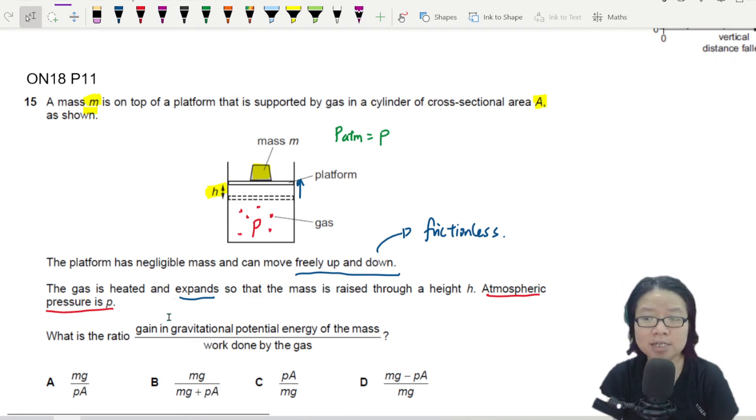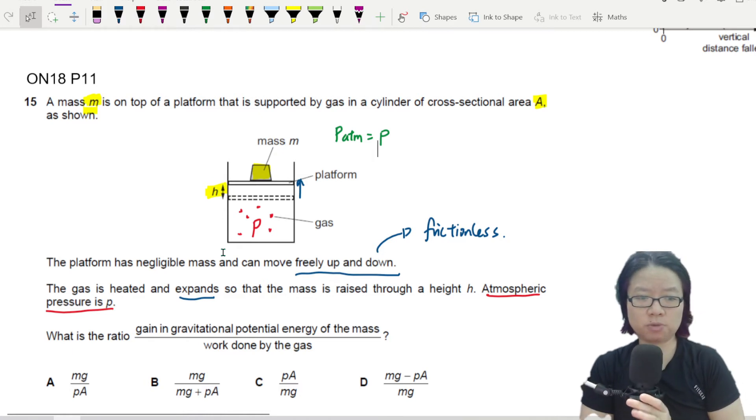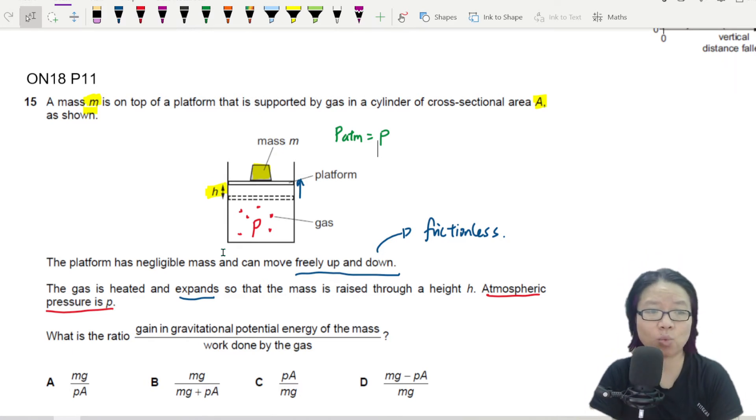Question is asking us, what is the ratio of the gain in GPE of the mass and the work done by the gas? So we need gain in GPE to work done.